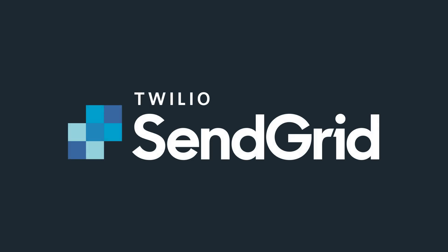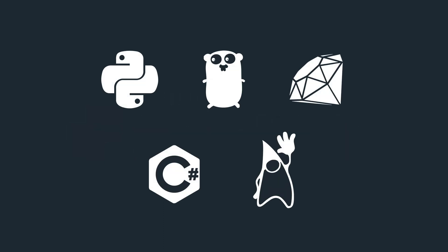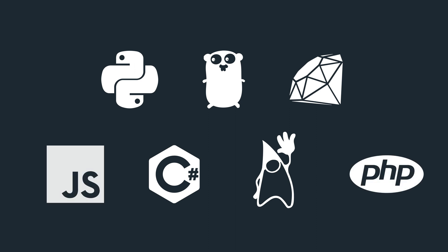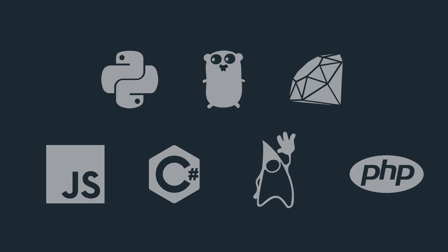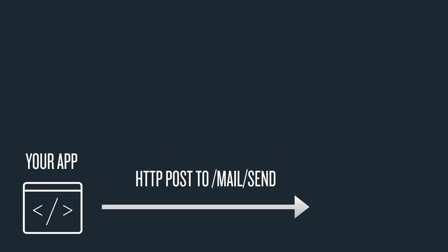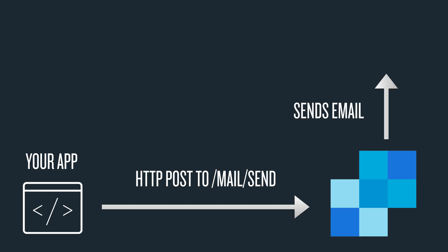Twilio SendGrid makes it super simple for you to send your first email in just 5 minutes or less. In this video, we'll show you how it works with the Go programming language, but if you use any of the languages appearing on the screen right now, there's a helper library just for you. Here's how it works: your app makes a POST request to /mail/send over in SendGrid, and SendGrid sends an email to your user's inbox.